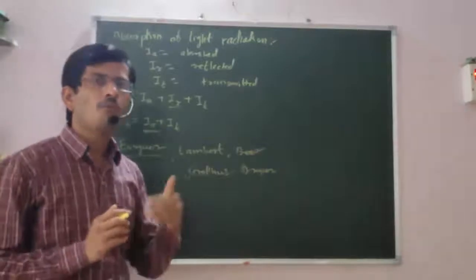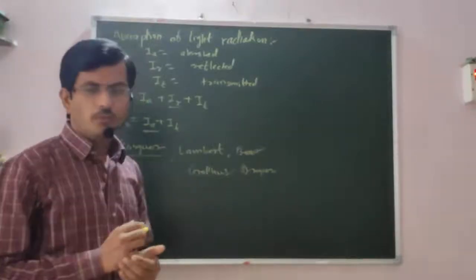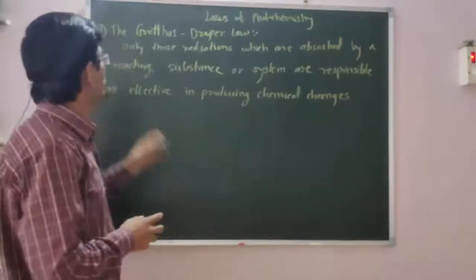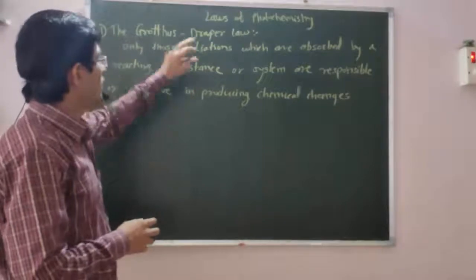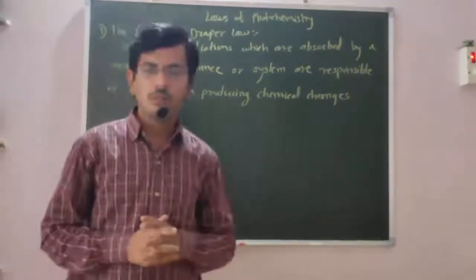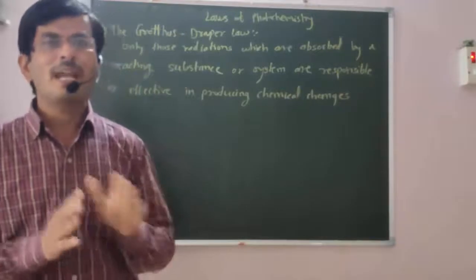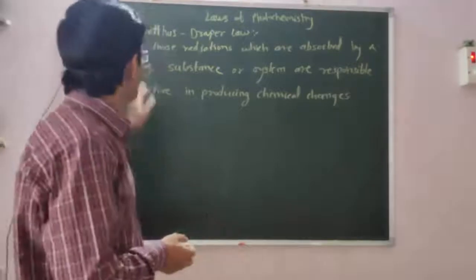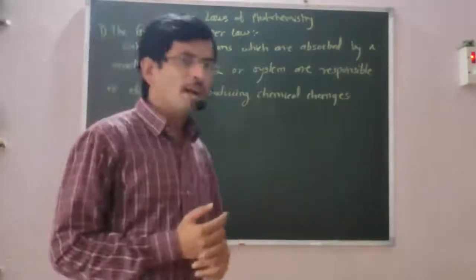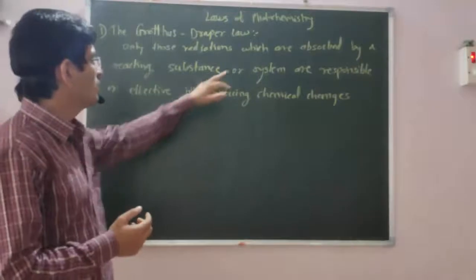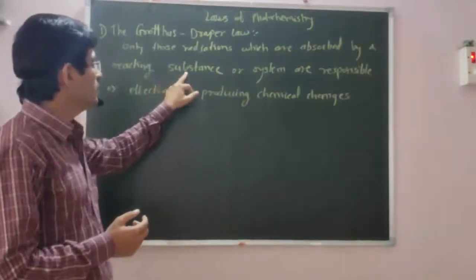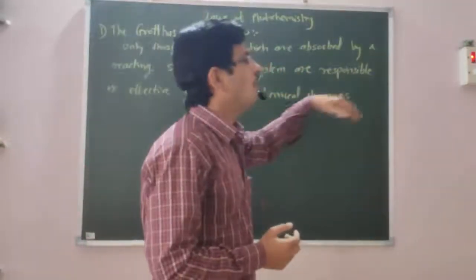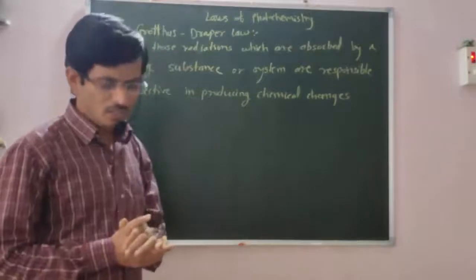These various scientists put forward some conclusions in the form of various laws. So we discuss different laws of photochemistry. The first law of photochemistry is the Grotthuss-Draper law. The statement of Grotthuss-Draper law is: only those radiations which are absorbed by a reacting substance or system are responsible or effective in producing chemical changes.